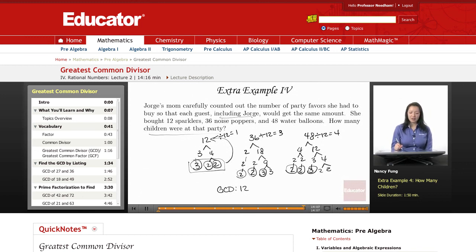So she's divided all the party favors evenly between all 12 students, or all 12 children in this case. Thank you for watching Educator.com.